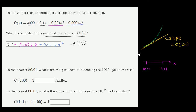If we want the exact actual cost of producing the hundred-first gallon, we would take c(101) minus c(100). That's the exact cost. But we can approximate it using the marginal cost — the derivative of our cost function right at that point — which gives us c prime of 100.